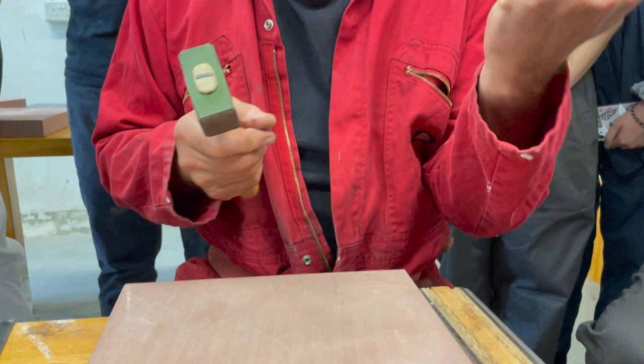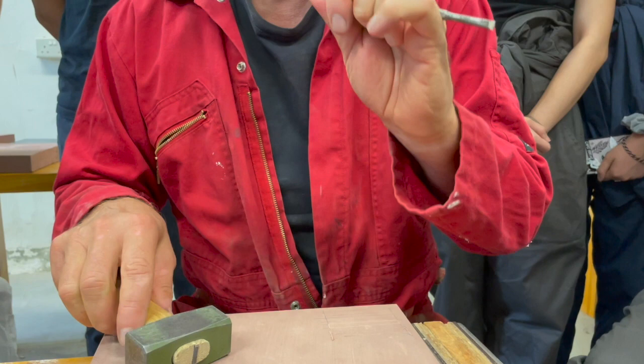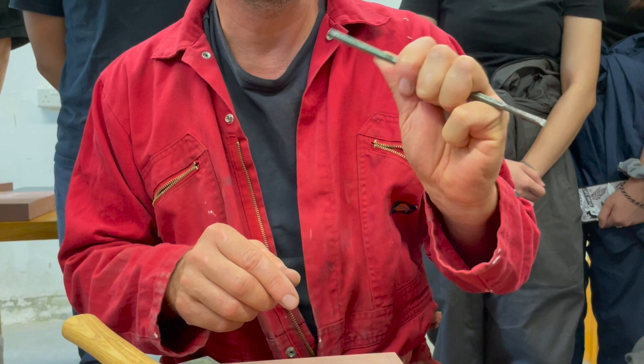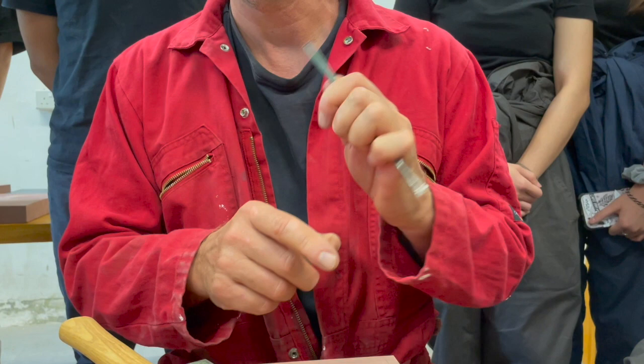You can hold it like this but the classic stone mason grip for letter cutting is this because you have far better control. It will hurt in the beginning but you get used to it. If it's too painful I actually wrap my little finger around it so I can almost hold the chisel just like this.